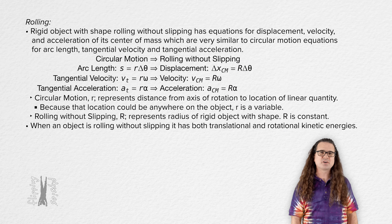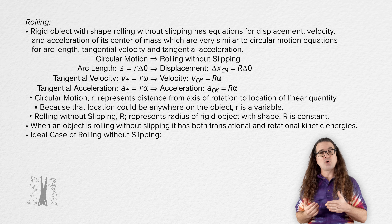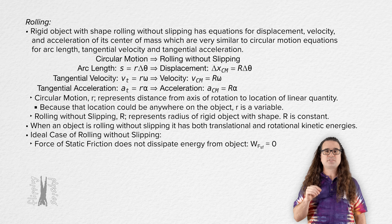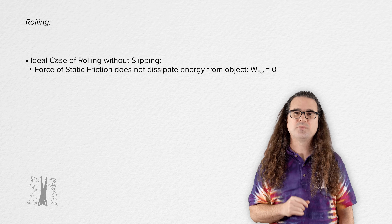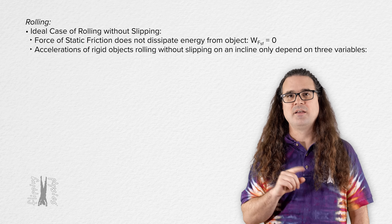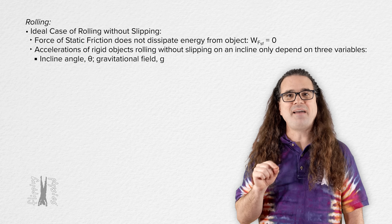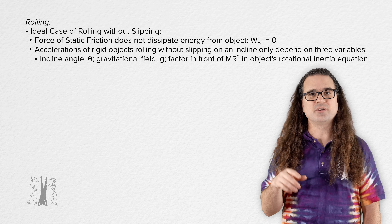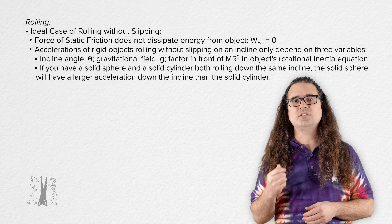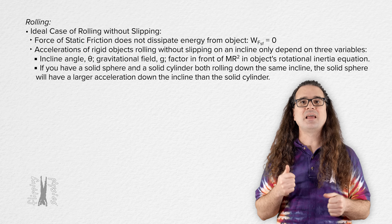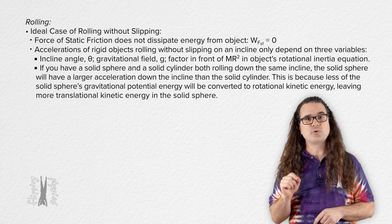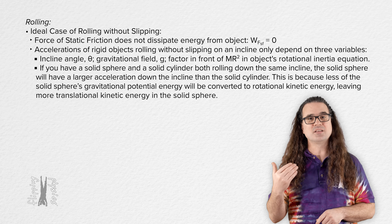In an ideal case, when an object is rolling without slipping, the force of static friction does not dissipate energy — it does not do any work on the object. The acceleration of a rigid object rolling without slipping down an incline only depends on three variables: the incline angle, the gravitational field, and the factor in front of mass times radius squared in the rotational inertia equation. A solid sphere will have a larger acceleration down the incline than a solid cylinder because less gravitational potential energy is converted to rotational kinetic energy, leaving more translational kinetic energy.